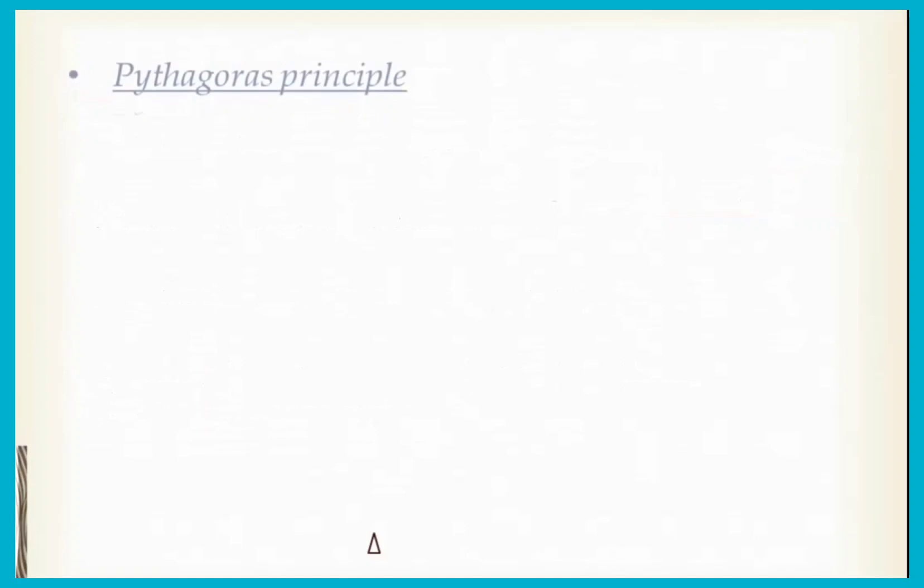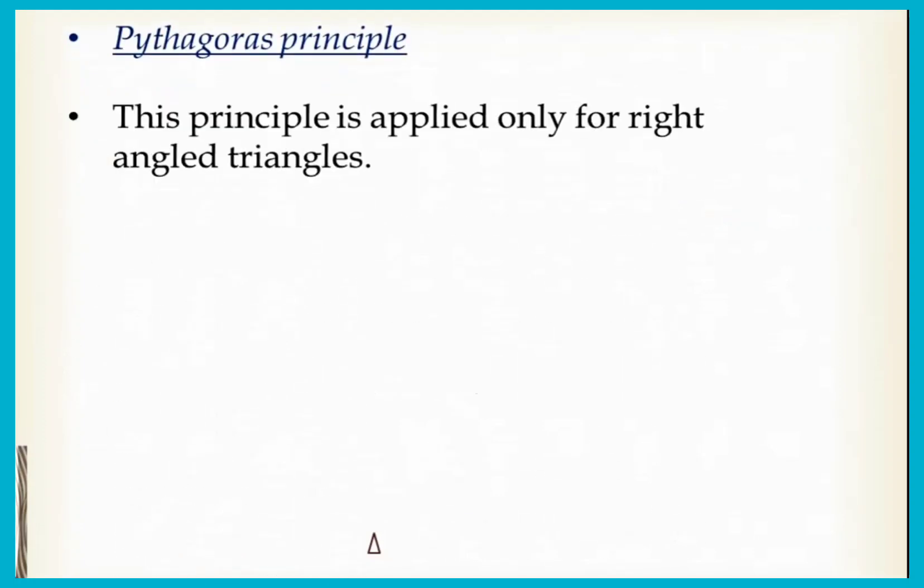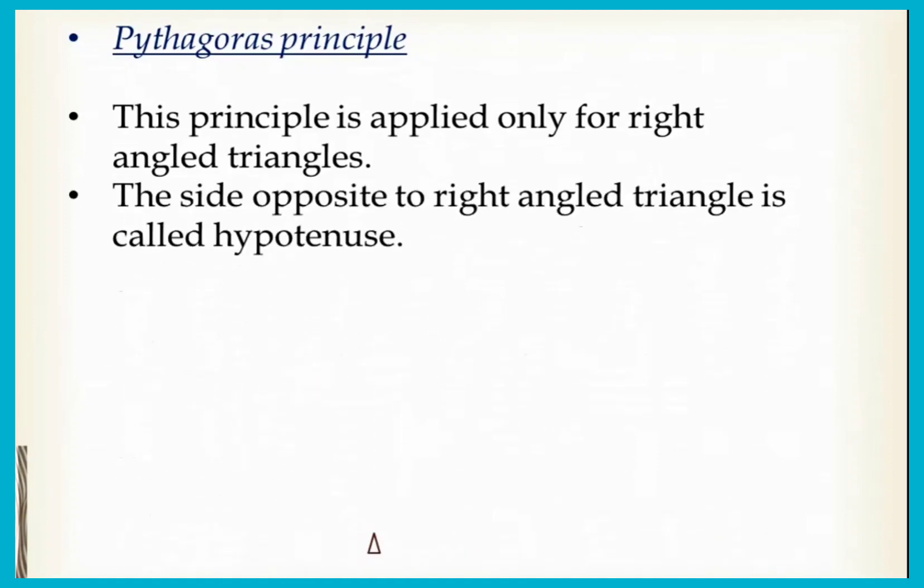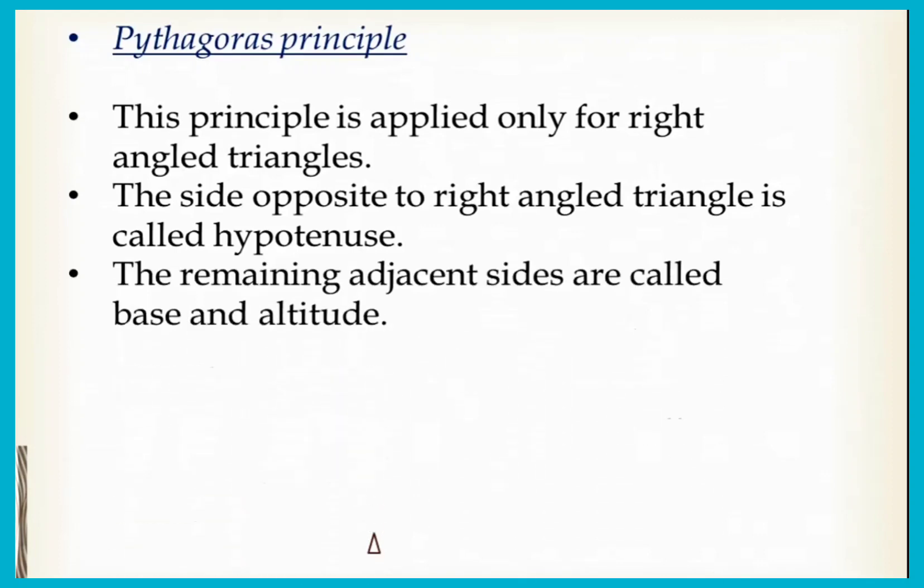Now let us move to the famous Pythagorean principle. This principle is applied only for right angle triangles. The side opposite to the right angle is called the hypotenuse. The remaining adjacent sides are called the base and altitude. Look at the figure: there is a right angle triangle named triangle ABC. The side opposite to the right angle is BC and it is named as hypotenuse.